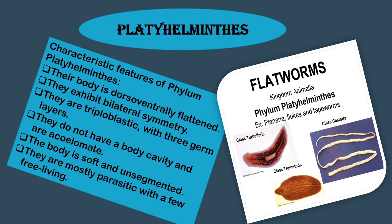The next phylum is Platyhelminthes. Their body is dorso-ventrally flattened — from both the dorsal and ventral sides. They exhibit bilateral symmetry, meaning if we divide the body from the middle we get two similar halves. They are triploblastic with three germ layers. They do not have a body cavity and are acoelomate. The body is soft and unsegmented. They are mostly parasitic with a few free-living. Examples are Planaria, flukes and tapeworms — all are Platyhelminthes.